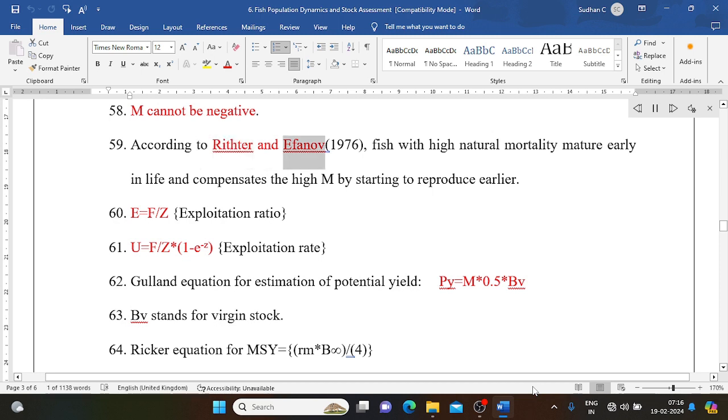According to Rikhter and Efanov 1976, fish with high natural mortality mature early in life and compensate the high M by starting to reproduce earlier. E equals F/Z, exploitation ratio. U equals F/Z times (1 minus e to the minus Z), exploitation rate.